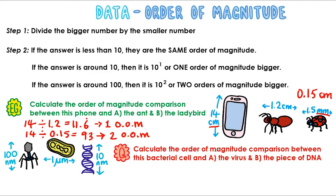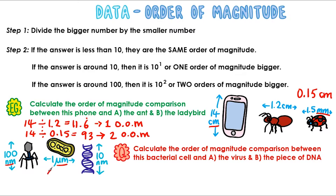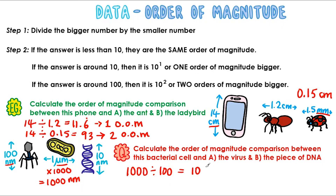Now we're calculating the order of magnitude comparison between a bacterial cell and a virus. The bacterial cell is 1 micrometre long and the virus is 100 nanometres long, so we've got different units. It's going to be easier if we turn the micrometres into nanometres — we multiply by 1000, which gives us 1000 nanometres. Now we divide the bigger number by the smaller number: 1000 divided by 100 gives us 10, so the answer is one order of magnitude bigger.